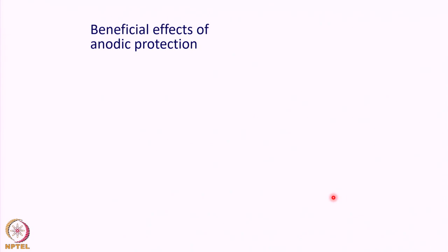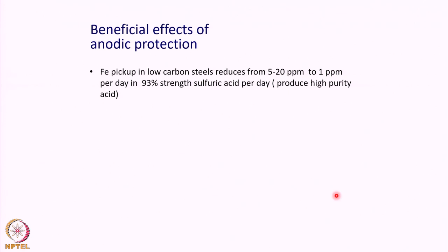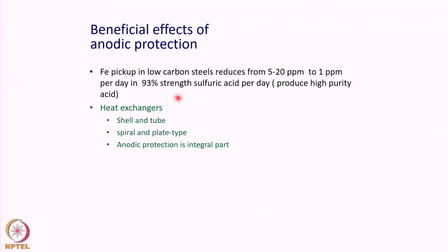The beneficial effects of anodic protection include that corrosion of steel structures in sulfuric acid leads to contamination of the acid to the extent of 5 to 20 ppm per day. By installing anodic protection, the quality of sulfuric acid can be significantly increased, enabling high-purity acid production. Even during transportation, anodic protection helps retain the purity of sulfuric acid. It can be applied over a range of components including shell-and-tube, spiral, and plate-type heat exchangers, making it an integral part of sulfuric acid manufacturing and transportation processes.